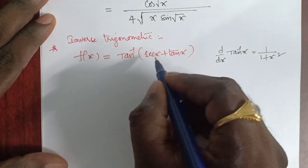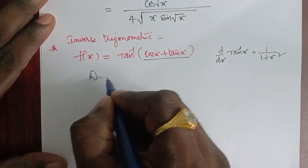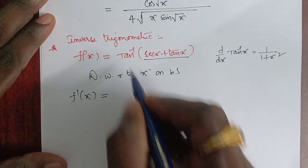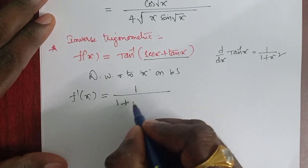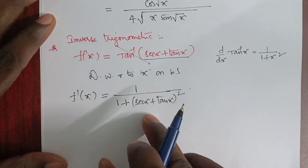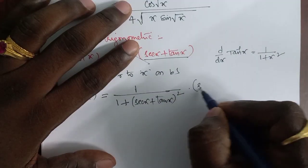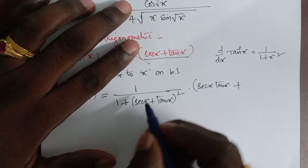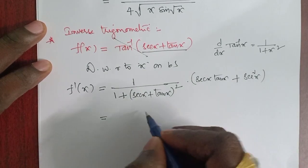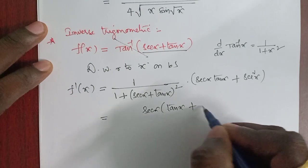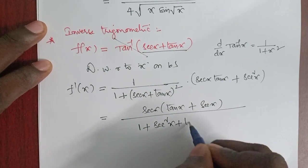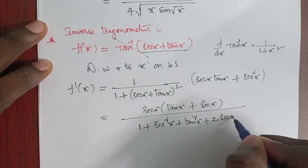The derivative of tan⁻¹(x) is 1/(1 + x²). So placing (sec x + tan x) in place of x, we get 1/(1 + (sec x + tan x)²) multiplied by the derivative of (sec x + tan x). Expanding the denominator: 1 + sec²x + tan²x + 2 sec x tan x.